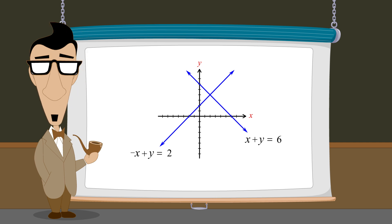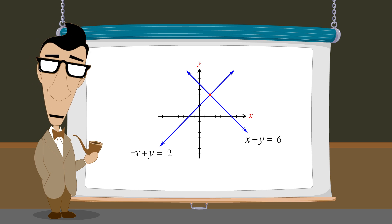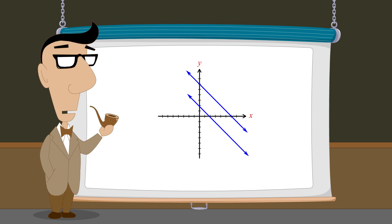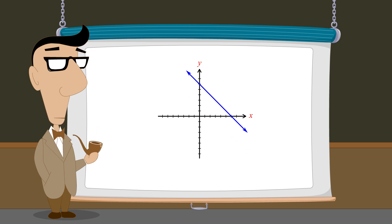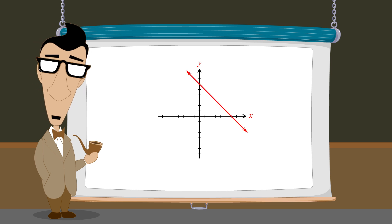We have also seen that the solutions to these systems fall into three categories depending upon how the two lines in the graph intersect. If the lines intersect at a single point, the system has a single unique solution which corresponds to that point. A system composed of two distinct parallel lines has no solutions since distinct parallel lines don't intersect. And a system composed of two identical lines has an infinite number of solutions since identical lines intersect at an infinite number of points.